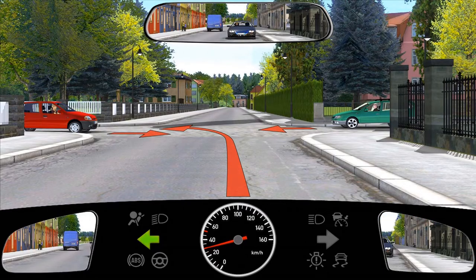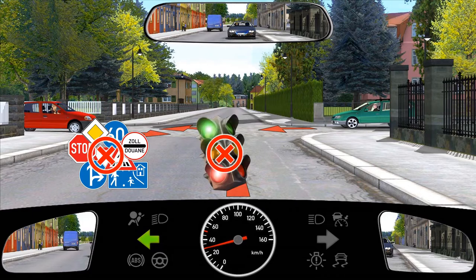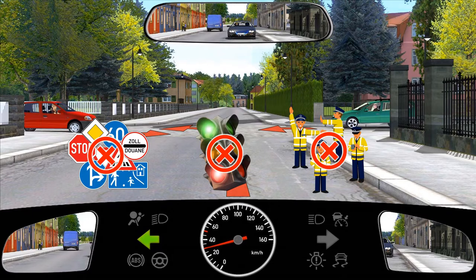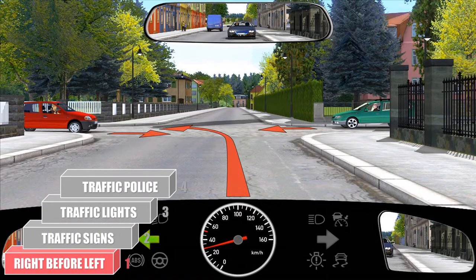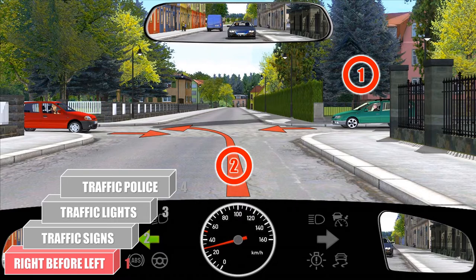Next scenario: we have no traffic signs, no traffic signals, and no police regulating the traffic. Therefore, level 1 — the rule right before left — applies here. As per the rule right before left, a green car coming from the right has the priority and can therefore drive first. The red car coming from the left has to wait and allow you to drive through. So the priority is: the green car coming from the right moves first, then we are allowed to drive after the green car and before the red car, and finally the red car will drive after both cars.